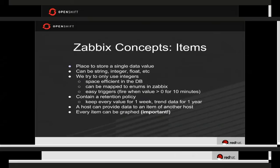The first thing to know about Zabbix is it has a concept called items — these are just buckets where you throw values. For instance, one of the things we monitor is the percent free on a disk. There's an item and you shove that value into it. The item just stores values historically. The values you can pass in can be strings, integers, or floats. We try to only use integers because they are extremely space efficient. You can map them to enums in Zabbix, so even though they're integers, you can say a '1' means a certain string, and the web UI will present that string.